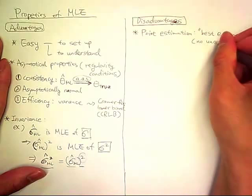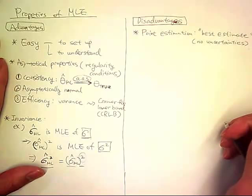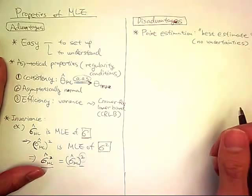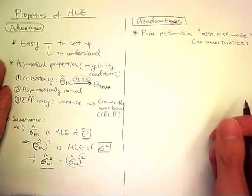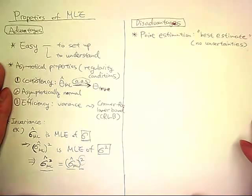So if you think of interval estimations which give the confidence intervals, it gives you uncertainties of that estimate so that you can have more information on how to select the estimated parameter, for example how reliable it is.